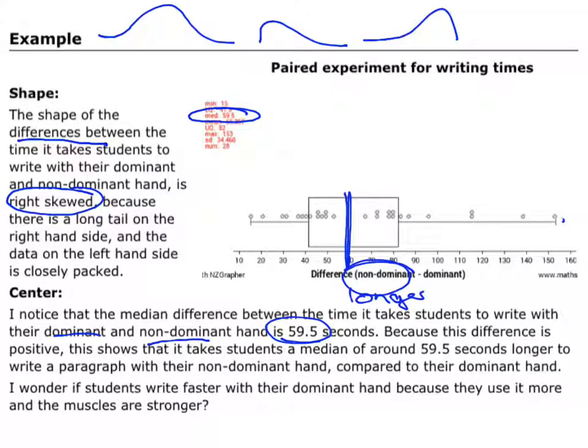So that's what I'm going to say: it means that students take a median of around 59.5 seconds longer to write a paragraph with their non-dominant hand compared with their dominant hand. Okay, so there's my shape and my center.